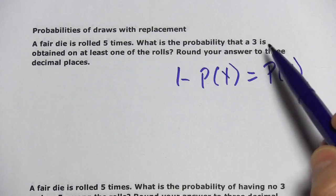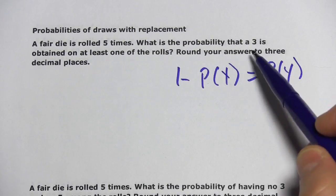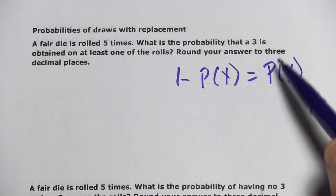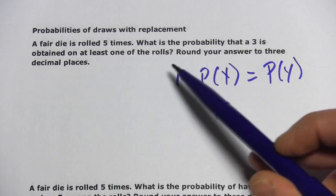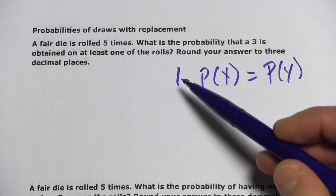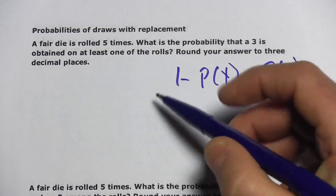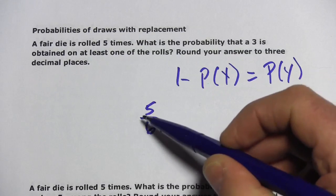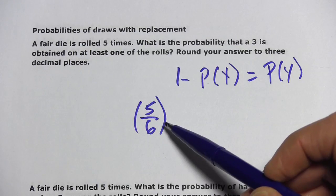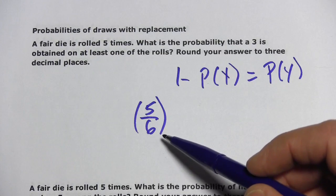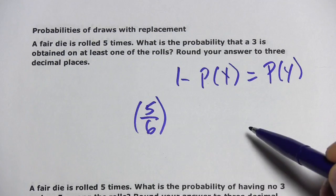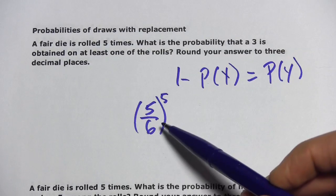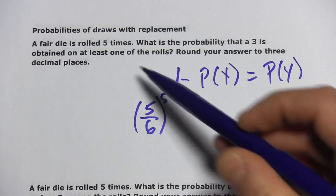We can use that here because it's easier to think about the probability of not rolling any threes. In this situation, you either roll at least one three or you roll no threes at all. What's the probability of rolling no threes at all? The probability of rolling not a three on the first roll is five out of six, because there are six sides on the die and only one of them is three. If we want the probability of not rolling a three five times, we're going to raise this to the fifth power. So this is the probability of not rolling any threes at all in five rolls.